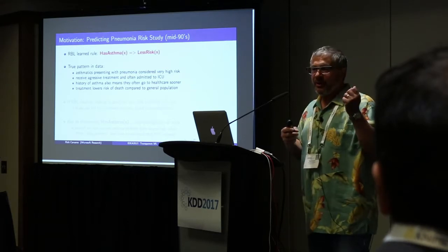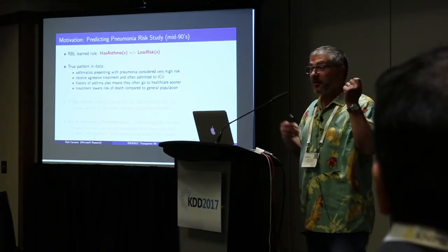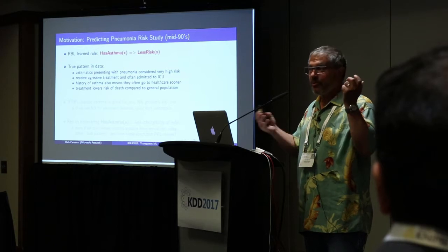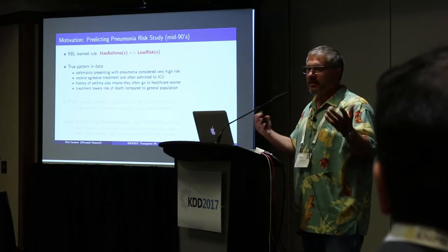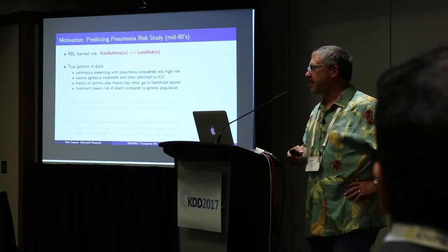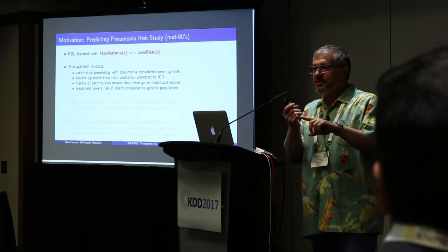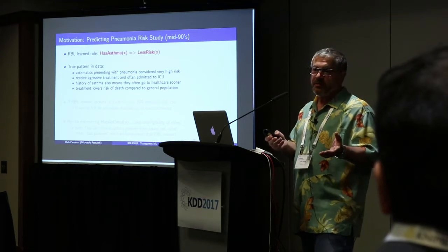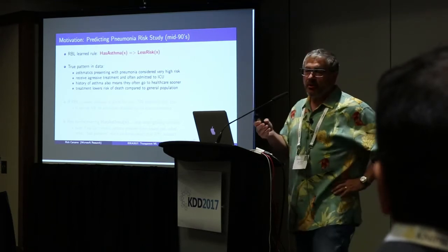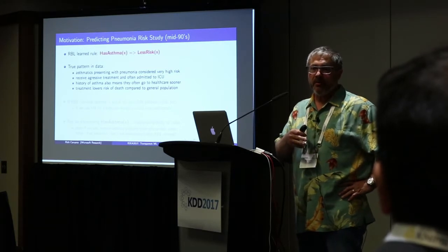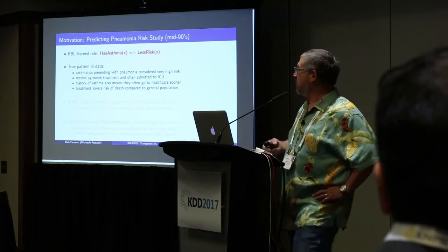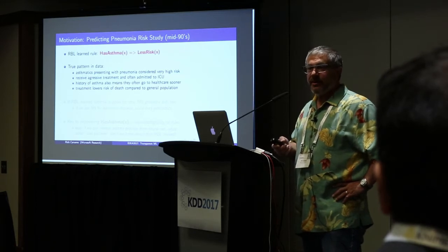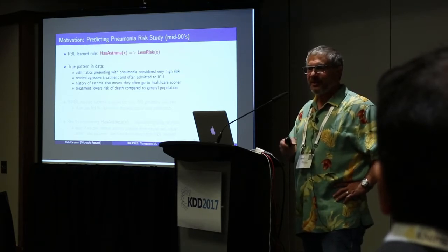They notice their symptoms earlier, they get worried earlier, they call the doctor earlier. They already have a doctor because they're asthmatics. The doctor takes it seriously when they're having trouble breathing. They get an appointment quickly, diagnosed with possible pneumonia, and get really aggressive treatment because asthma is considered a serious risk factor. All of these things — early noticing of symptoms, early treatment, very aggressive treatment — are so effective that it actually does cut their probability of death. So it is a true pattern in the data: asthmatics actually have a lower chance of death than non-asthmatics. It doesn't mean asthma is good for you; it just means they're lower chance of death.